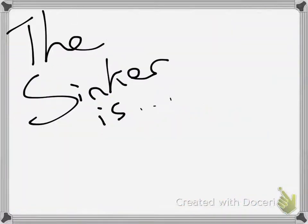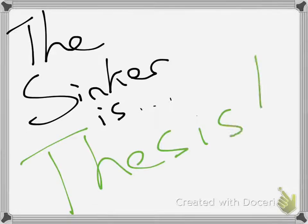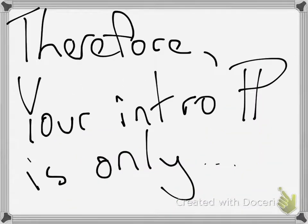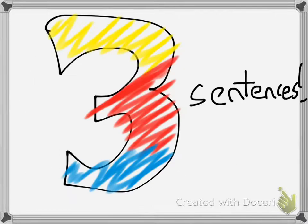Next up, we have the sinker. The sinker is simply your thesis statement, and we've already gone over that, so you should know the formula. That would be the third sentence of your introduction paragraph. Your intro paragraph is only three sentences long — hook, line, and sinker. That's all you need to get started on your essay.